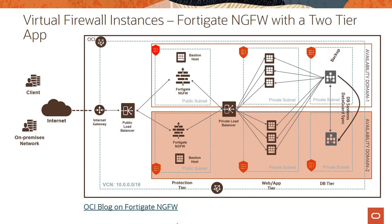As you see in this sample architecture, we are using two instances of the FortiGate virtual firewall running inside public subnets across two availability domains. In front of them there is a public load balancer, so all traffic hitting these instances is first load balanced across the two availability domains. All traffic that comes to the virtual cloud network has to pass through the FortiGate next-gen virtual firewall, and similarly on the way out it goes through the firewall again.